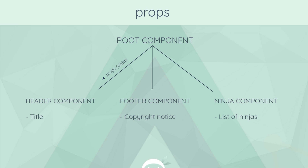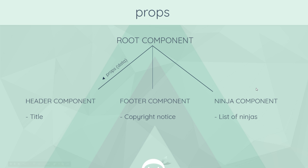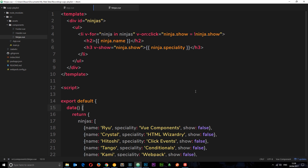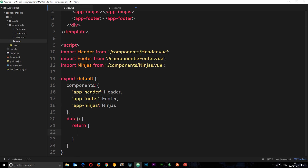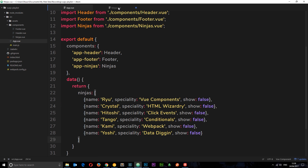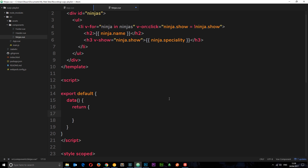Instead we just create one component - this ninja component - and that is going to do all the heavy lifting and output those ninjas for us. So how do we output different data each time we use this component? We pass down the list of ninjas as a prop to the ninja component every time we need it. We're nesting this component in each of the five different parent components - the five pages - and each time we nest it we pass down a prop with different data, but we're still using the same ninja component. There are two steps to passing and receiving props: passing them and receiving them.